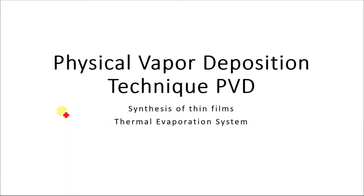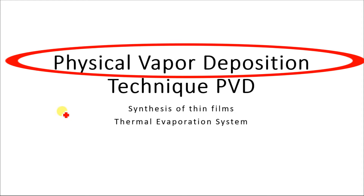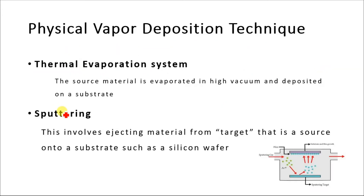Welcome to EasyTV. Today we are going to discuss the physical vapor deposition technique. This is a technique used for the synthesis of thin films. Thin films can be synthesized with two methods: one is physical vapor deposition, known as PVD, and the second is chemical vapor deposition, known as CVD.